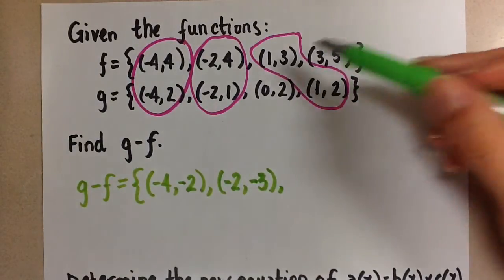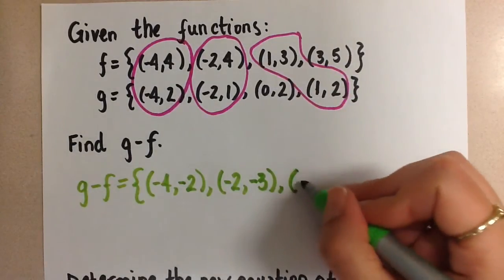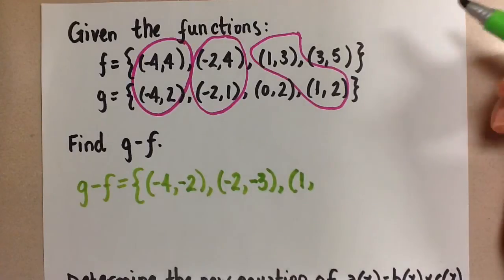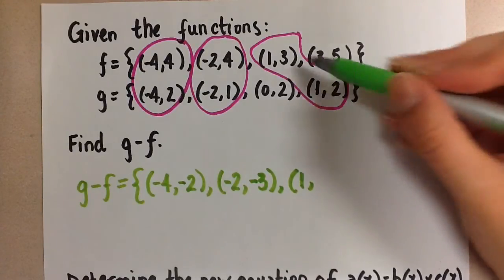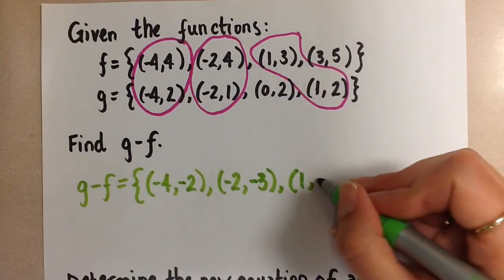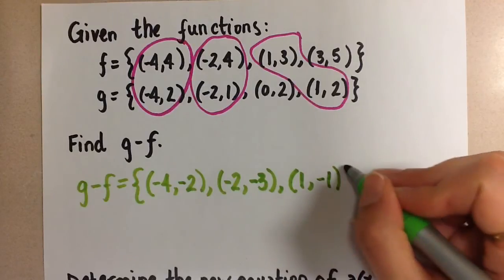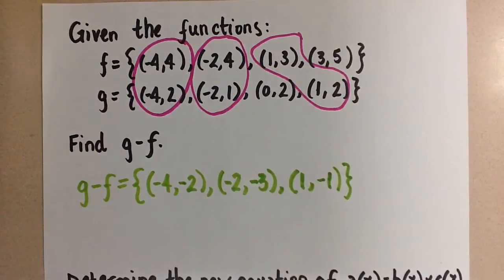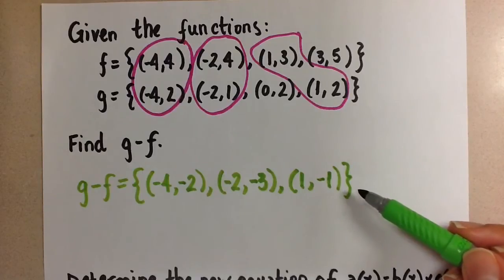Then for our last point, the 1 is staying the same for the x-coordinate, and then the new y-coordinate will be 2 minus 3, which is -1. So those are the new points in this combined function.